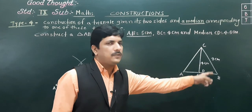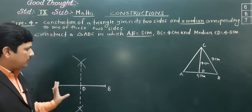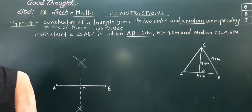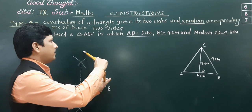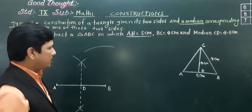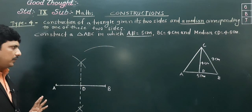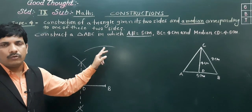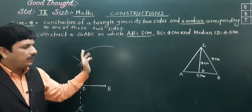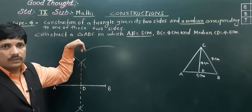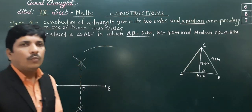Now, BC is equal to 4 centimeter, so take 4 centimeter distance and mark an arc from point B. Then DC is given as 4.5 centimeter. With only the arc from B we cannot decide the position of point C, because every point on that arc is 4 centimeter from point B. So we also need to take CD equal to 4.5 centimeter from point D.